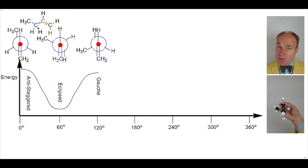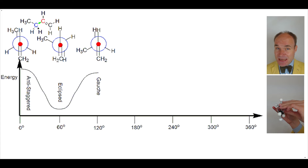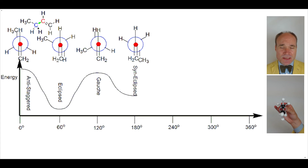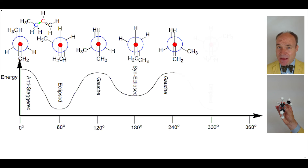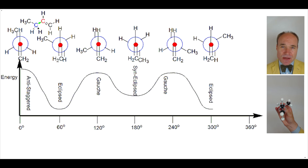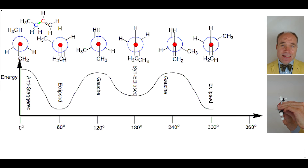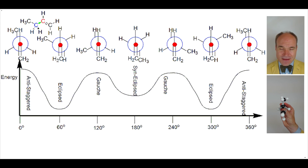That gauche conformation is very similar in energy to the anti-staggered conformation. Another 60 degree rotation sees another drop in energy to the syn-eclipsed conformation with a dihedral angle of 180 degrees. From there, another 60 degree rotation increases energy to yet another gauche conformation at a dihedral angle of 240 degrees. Another 60 degree rotation lowers the energy to another eclipsed conformation with a dihedral angle of 300 degrees. Finally, the last 60 degree rotation increases energy back to the same anti-staggered conformation we began with, at a dihedral angle of zero or 360 degrees.